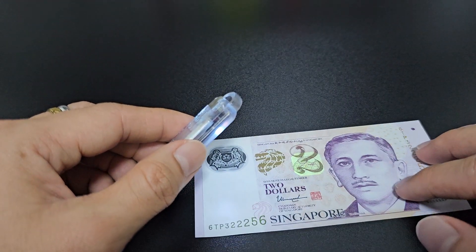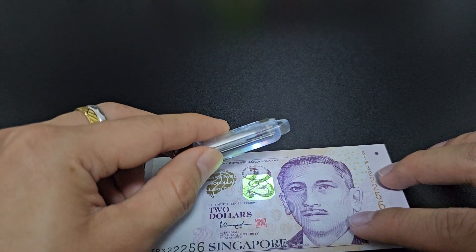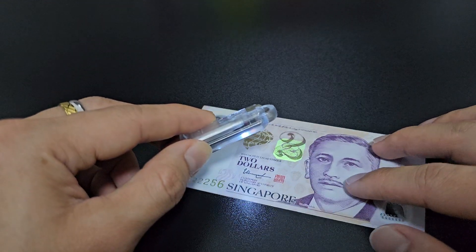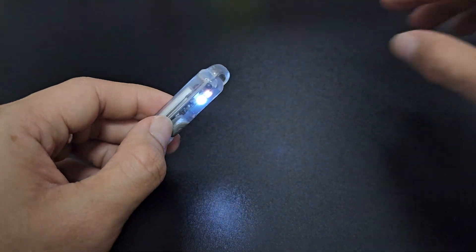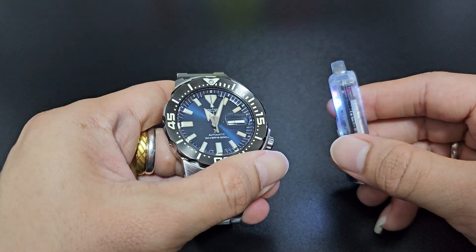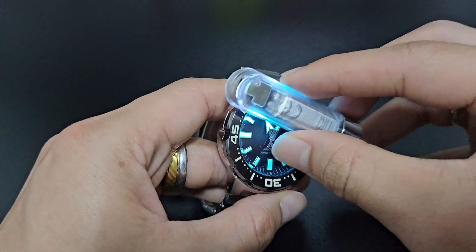So for example, I have a $2 note here. You can see the UV light actually shows the security features of a currency note. And also you can use this light to charge up your wristwatch's lume. Here I have a Seiko Monster, so I can charge it up using the UV light over here as well. And as you can see, it charges up very quickly.